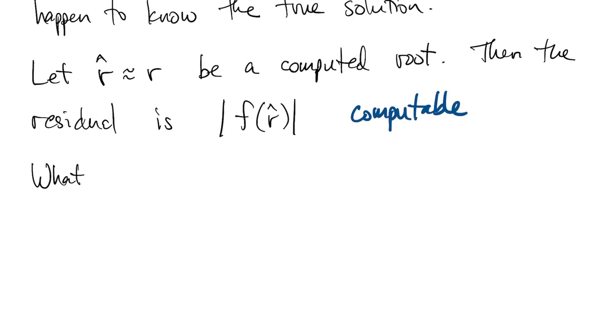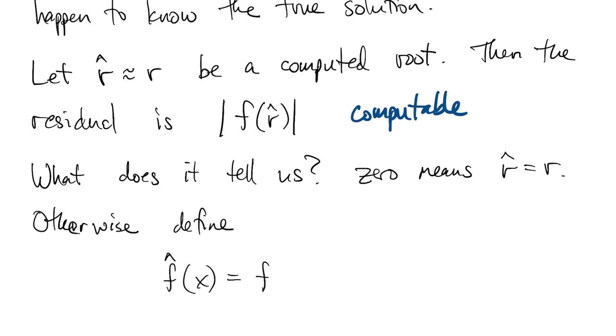So what does it tell us about the size of the error? Well, clearly, if it's zero, then that means we got the root exactly. But otherwise, we can define a different function, f hat, by taking the original f and subtracting off this constant value.